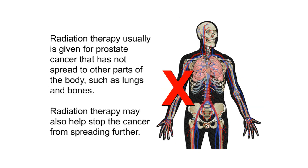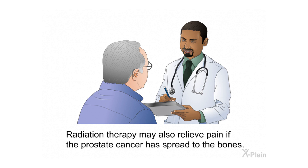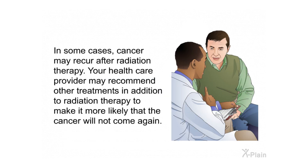Radiation therapy is usually given for prostate cancer that has not spread to other parts of the body, such as lungs and bones. Radiation therapy may also help stop the cancer from spreading further. Radiation therapy may cure the disease if the cancer is in its early stages. It may also relieve pain if the prostate cancer has spread to the bones. In some cases, cancer may recur after radiation therapy, and your health care provider may recommend other treatments in addition to radiation therapy.